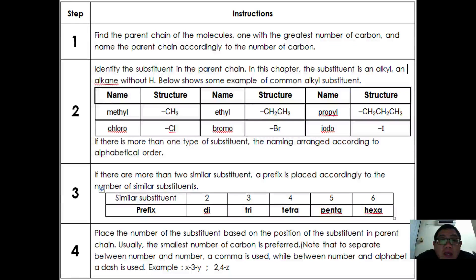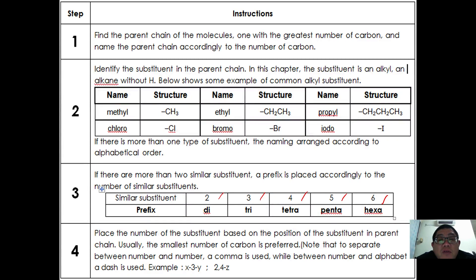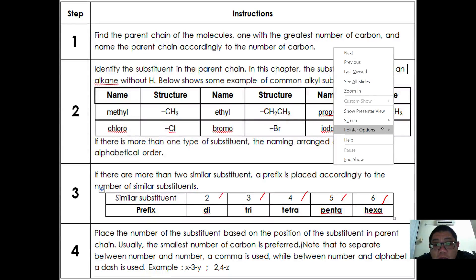Here are the step-by-step rules for naming haloalkanes: find the parent chain with the greatest number of carbons and name it according to carbon count. Identify all substituents — in this chapter that includes alkyl groups and halogens. If there is more than one type of substituent, arrange names alphabetically. Use multiplying prefixes — di (2), tri (3), tetra (4), penta (5), hexa (6) — for identical substituents, and assign the lowest possible locant numbers.